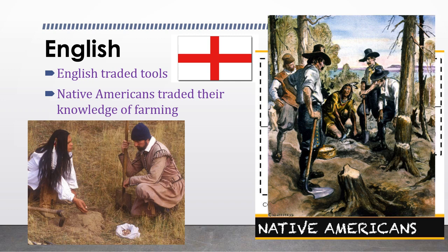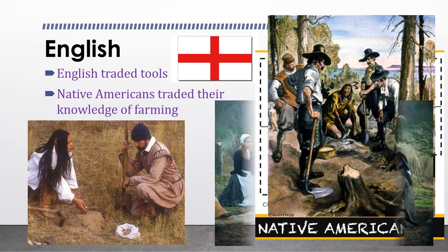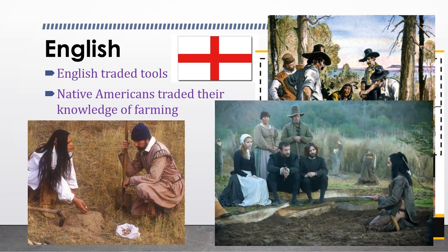Native Americans had methods of farming that were different from the ways that Europeans grew crops. One unique strategy that the people of Plymouth in Massachusetts benefited from was planting a dead fish along with the seeds, to provide nutrients in the soil as a type of fertilizer and enable the plant to grow stronger and healthier.